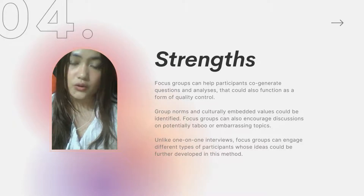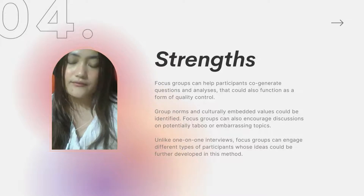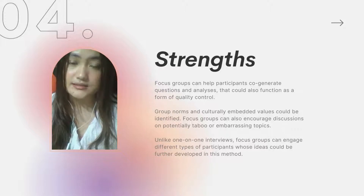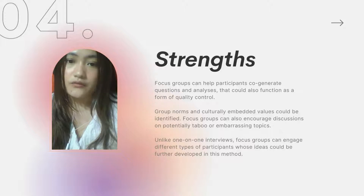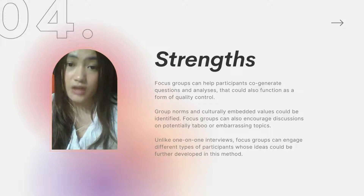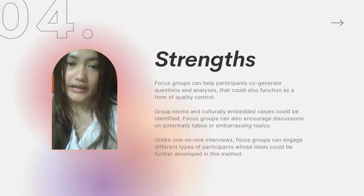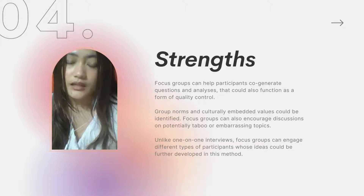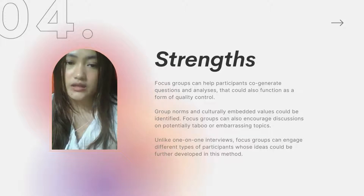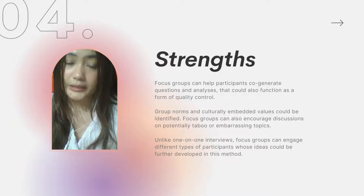Second, the norms and culturally embedded values of the group can be identified. FGDs put primacy on understanding the shared and unique attitudes, experiences, and frameworks of understanding of participants. Questions related to social interaction processes are usually the most suitable for FGDs. Focus groups frequently open dialogue on potentially taboo or embarrassing topics not typically discussed in normal contexts. Lastly, unlike other methods, FGDs can engage different types of participants, including those who cannot read or write, and encourage participation from those reluctant to be interviewed alone.